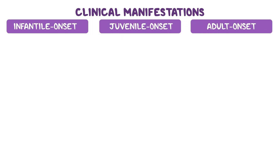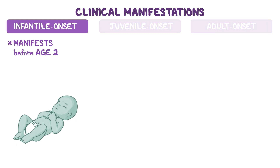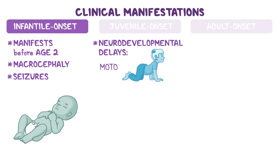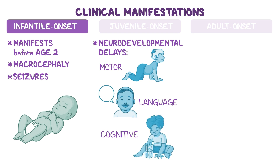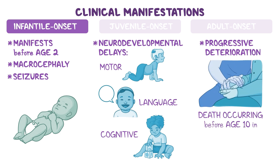Alexander disease can typically be classified into three main types, depending on the age of onset. The most common is the infantile onset form, which typically manifests before age two. Infants often present with macrocephaly, or an enlarged head circumference, and have seizures. They may also experience neurodevelopmental delays, including motor, language, and cognitive development. Affected infants typically face progressive deterioration, with death occurring before age 10 in most cases.